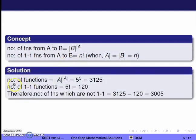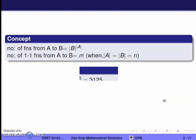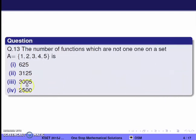We calculate: the cardinality of A is 5, so the total number of functions is 5^5 = 3125. The number of one-to-one functions is 5! = 120. Therefore, the number of functions which are not one-to-one is 3125 − 120 = 3005. The correct option is 3005, so option 3 is correct.